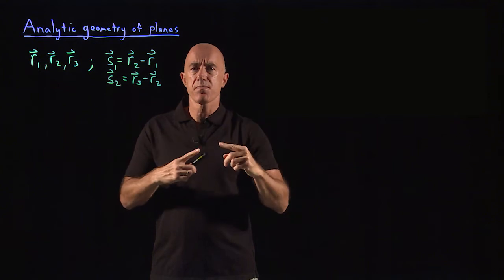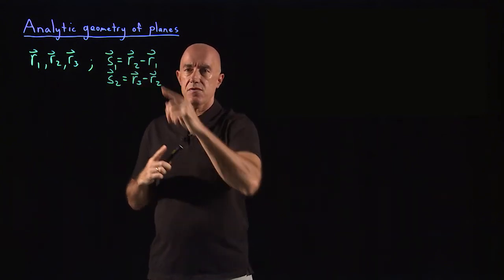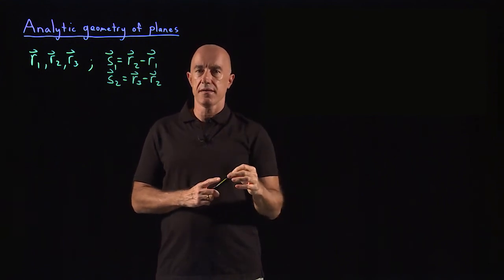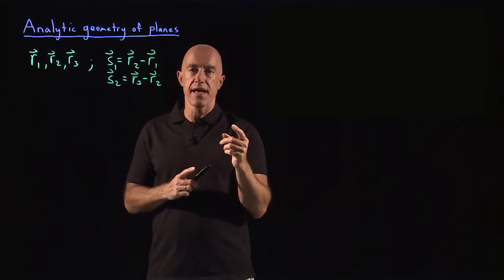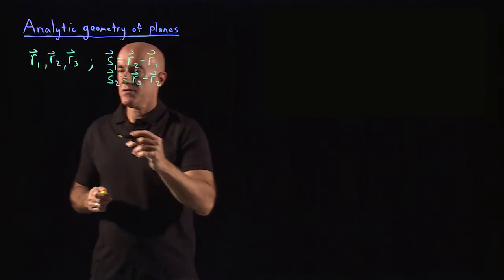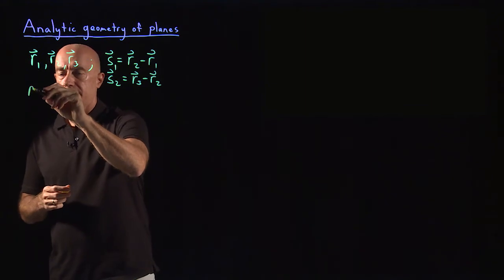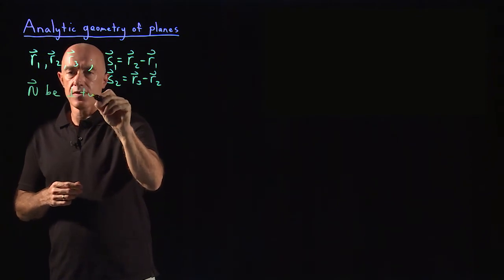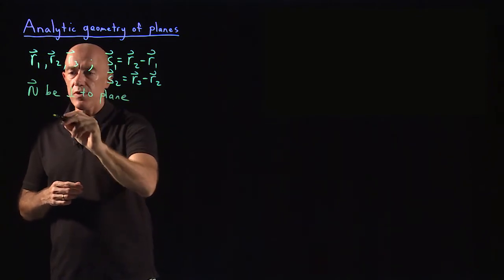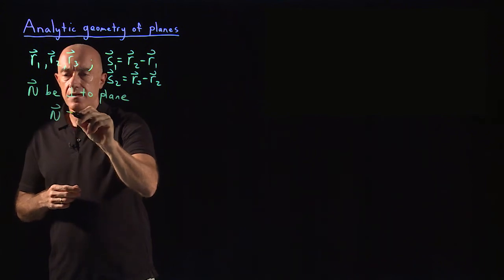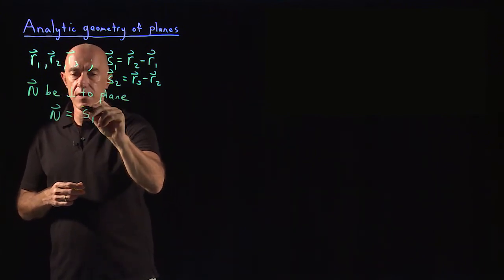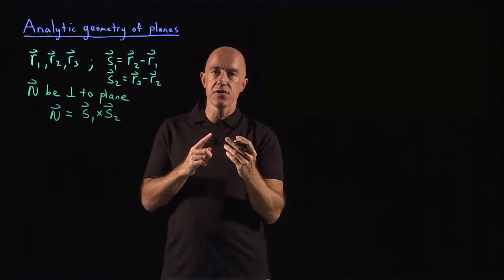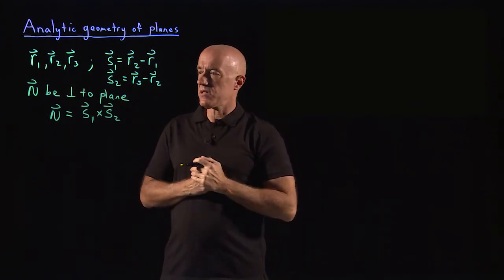Their cross product — the cross product of two vectors that lie in the plane — will be perpendicular to the plane. So we can construct a vector that is perpendicular to this plane. Let n be perpendicular, or normal, to the plane. We can construct n by taking the cross product of the displacement vectors.